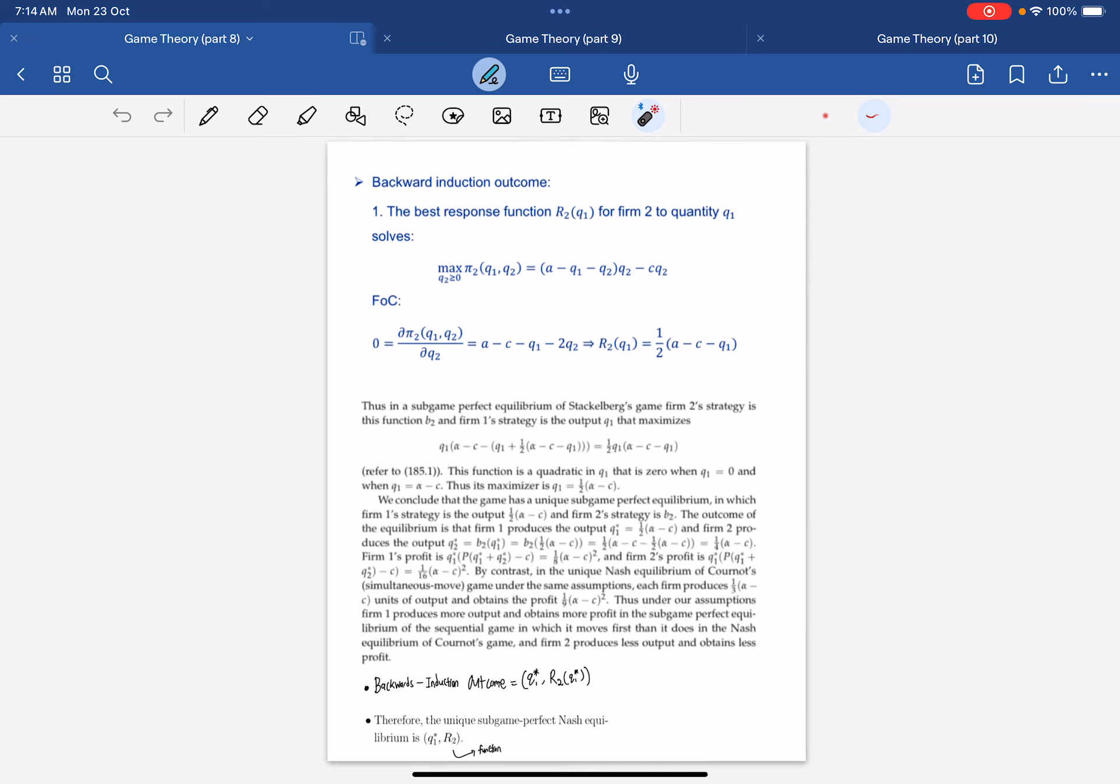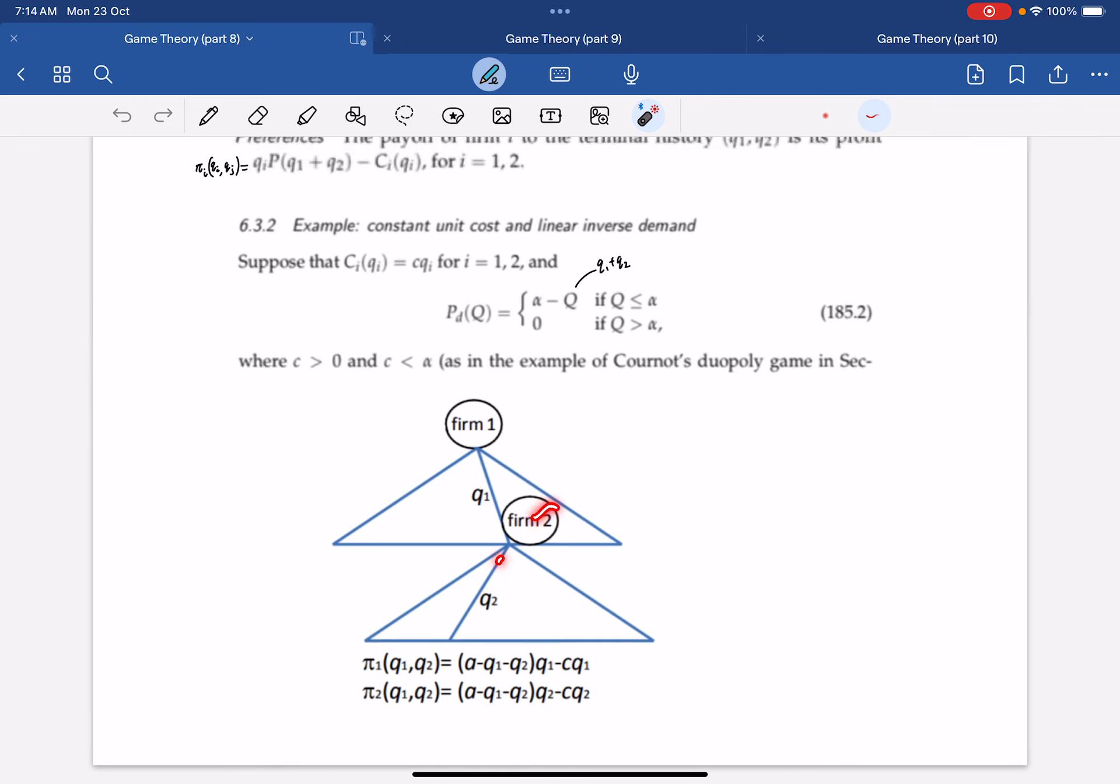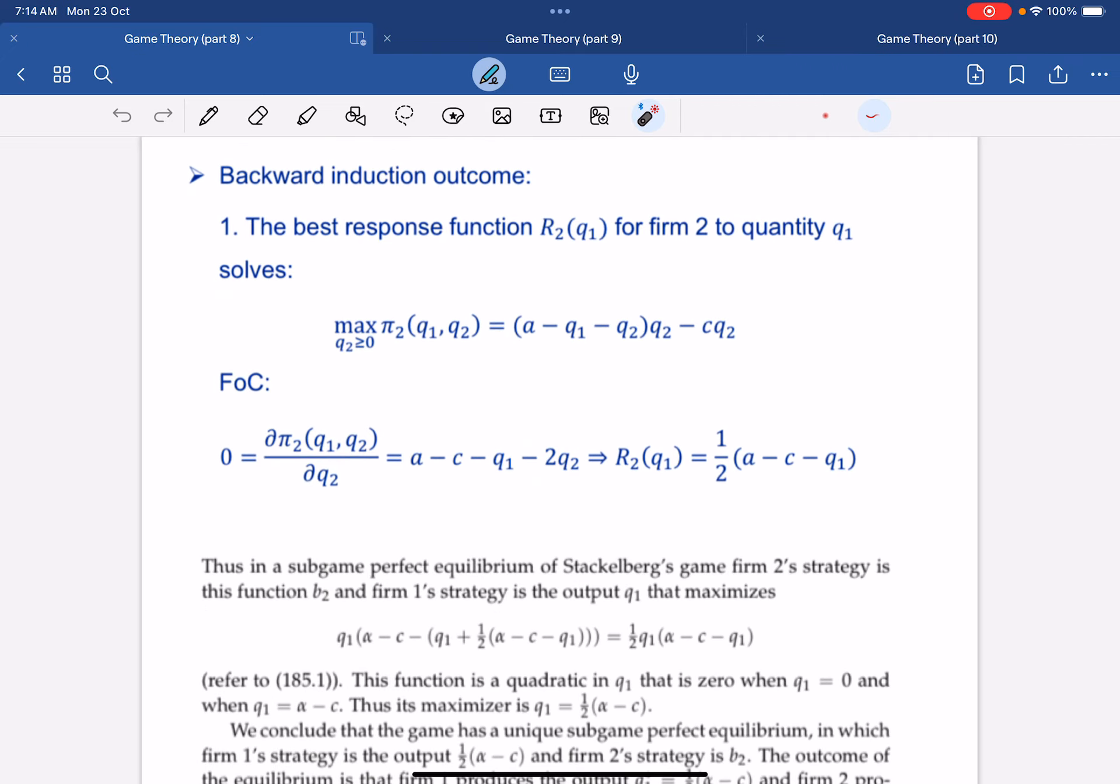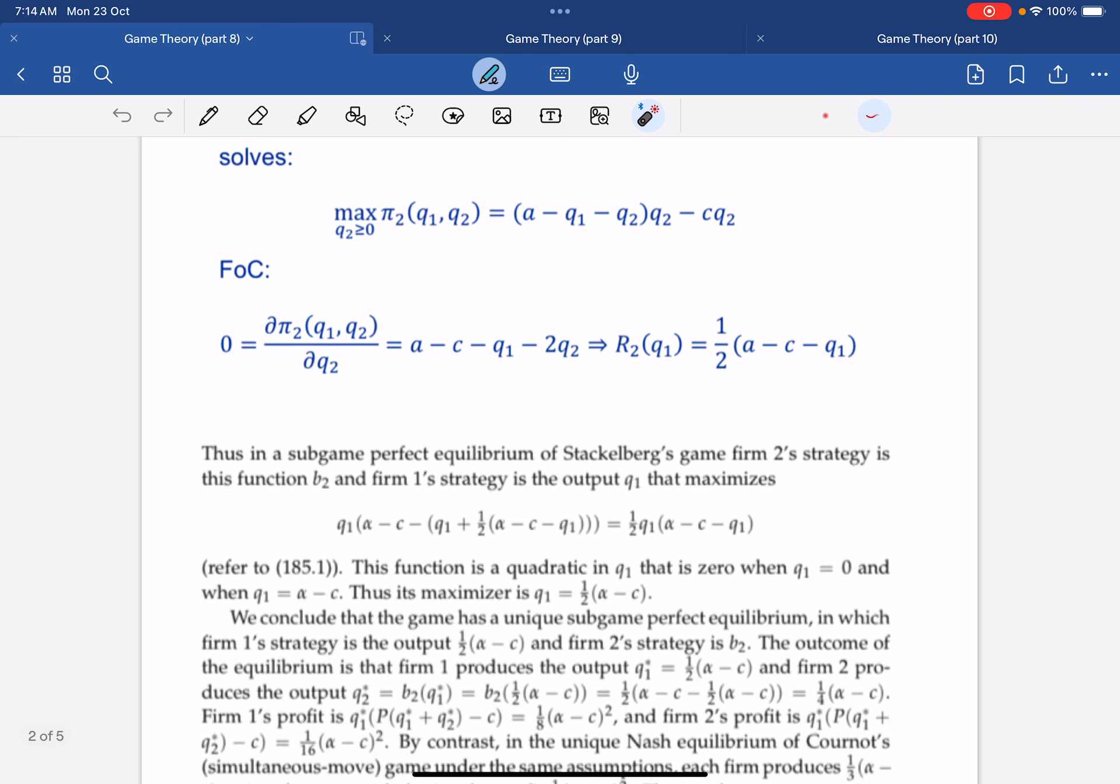By the backwards induction outcome, we first need to maximize firm 2, which is over here. To maximize it, we need to use the first order condition to maximize this, which means we have to partial differentiate this with respect to Q2. Because firm 2 can only produce Q2, Q1 is like a constant that is already chosen. So, we profit maximized, and we see that Q2 must equal to half of A minus C minus Q1.